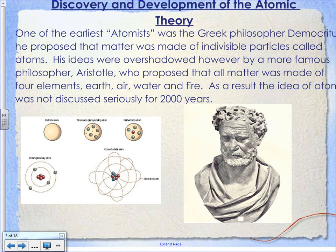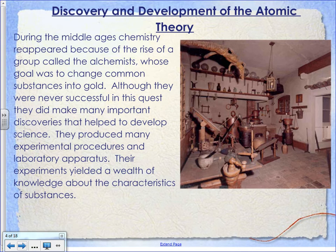People forgot about Democritus's idea of the atom for about 2,000 years. During the Middle Ages, chemistry reappeared because of the alchemists, whose goal was to change common substances into gold. They were never successful, because in order to do that you would actually have to change the atoms of whatever you're dealing with into a different kind of atom, which is impossible. You'd have to physically alter its atomic structure, and you can't just go in with tweezers and start pulling protons and electrons off.